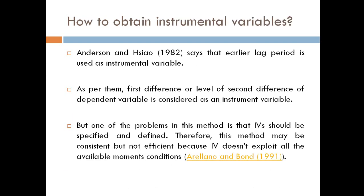The question is how to obtain instrumental variables. Anderson and Hsiao (1982) say that an earlier lag period is used as an instrumental variable. As per them, the first difference or level of the second difference of the dependent variable is considered as an instrumental variable. But one problem with this method is that instrumental variables must be specified and defined.